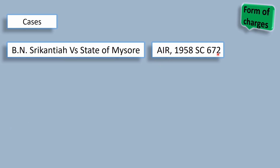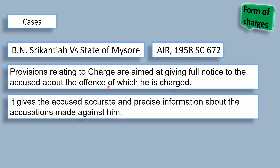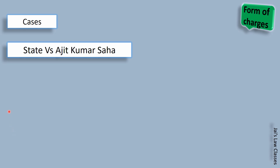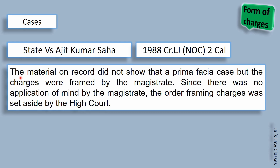It was held that the provisions relating to the charge are aimed at giving full notice to the accused about the offense with which he is charged, and it gives the accused accurate and precise information about the accusation made against him. Charge is therefore a very important part when we proceed with a case in court. In State v. Arjit Kumar Saha (1988 Criminal Law Journal NOC, Calcutta), it was held that the material on record did not show a prima facie case, but the charges were framed by the magistrate. Since there was no application of mind by the magistrate, the order framing charges was set aside by the high court. The magistrate must apply his mind — this is a very important point.